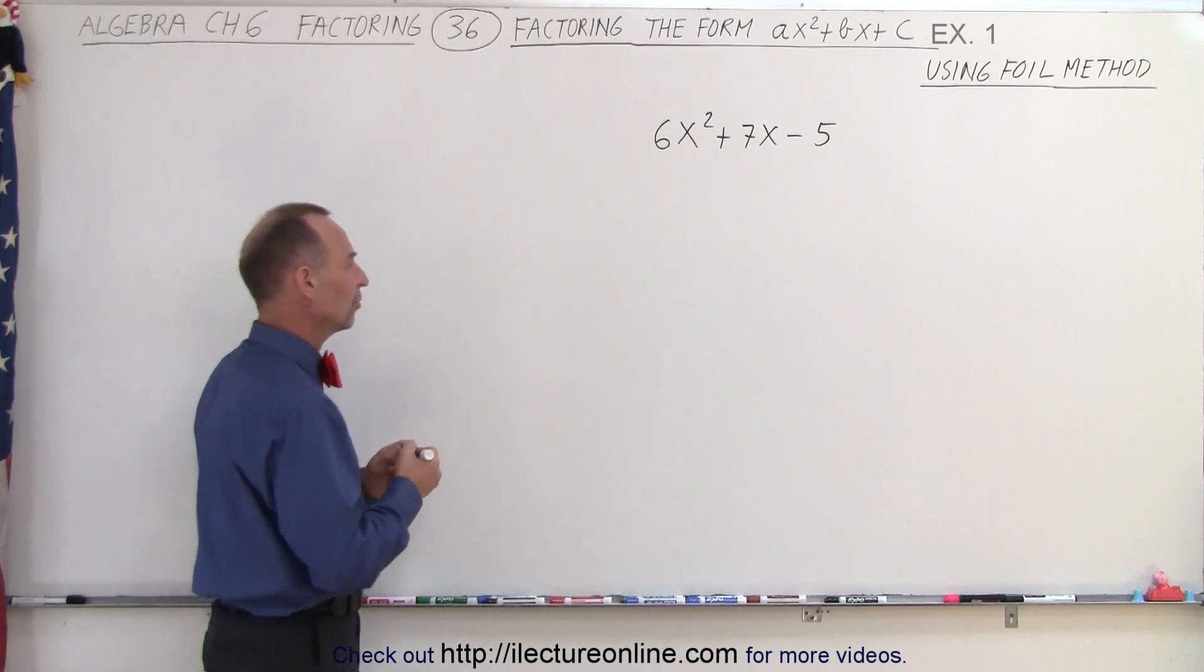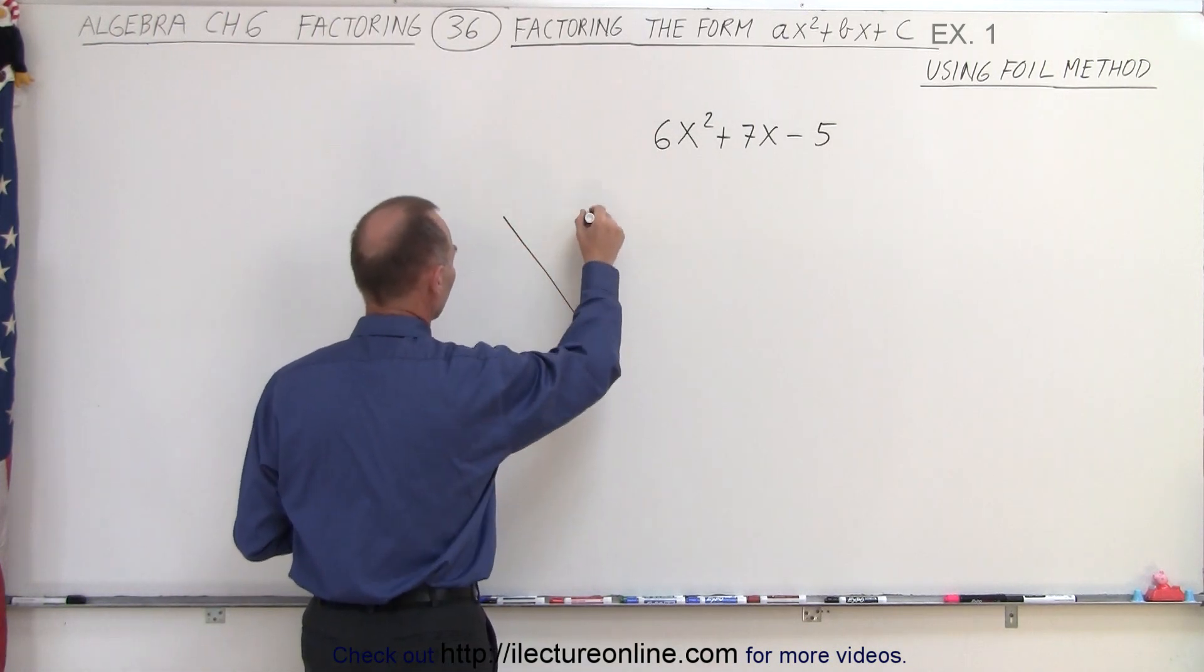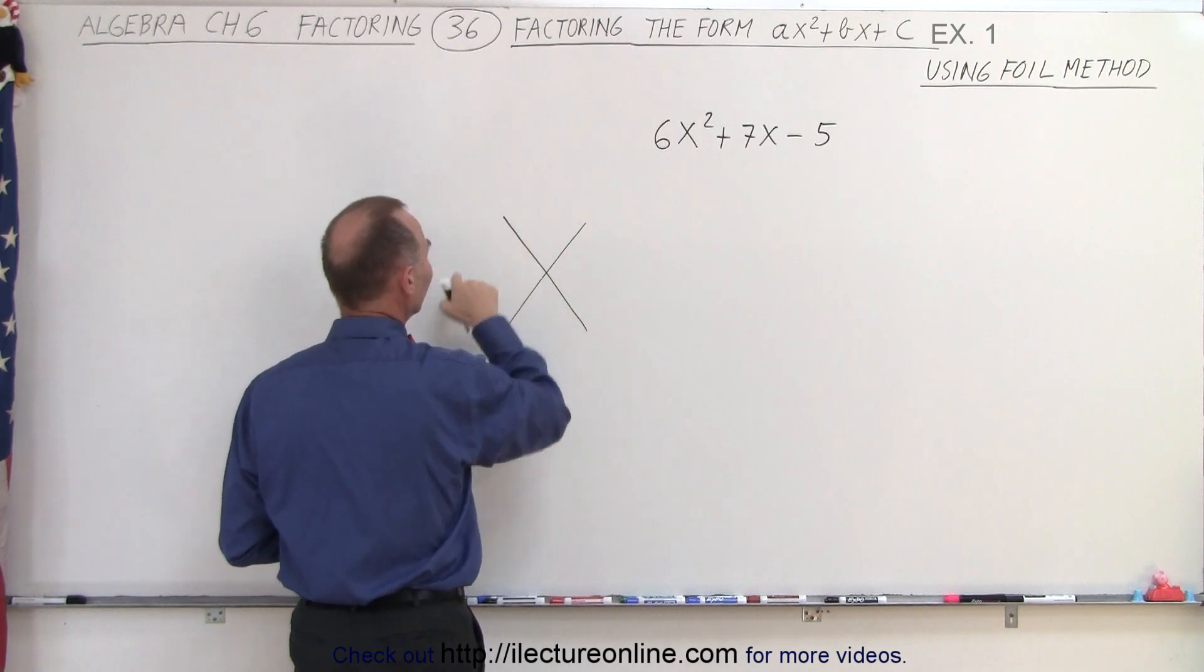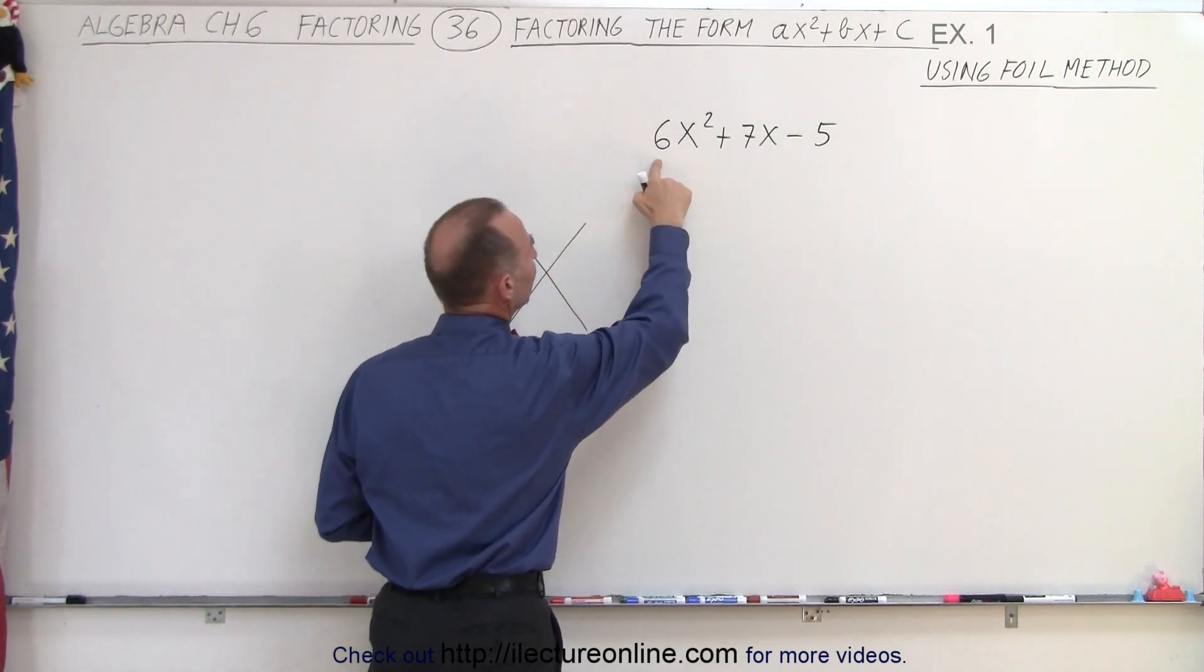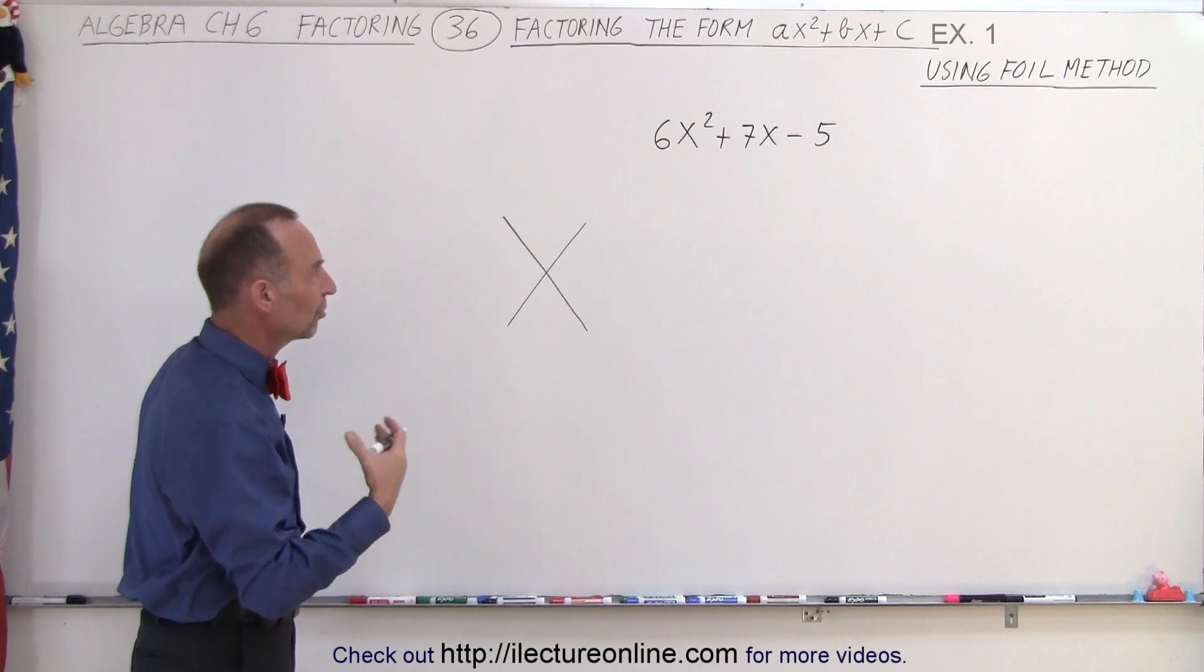So what we can do is as follows. We can draw a big cross. There's the FOIL. And on the left side, we're going to find all the combinations we can put down that give us the number 6.